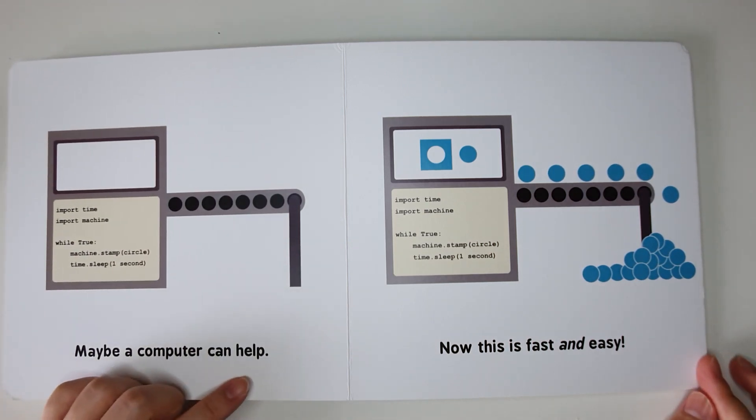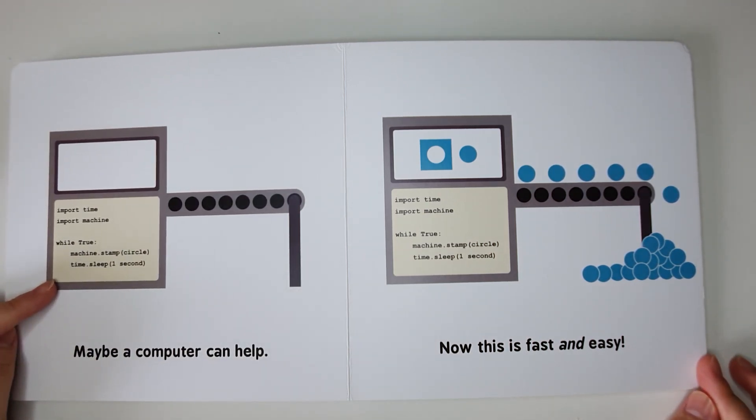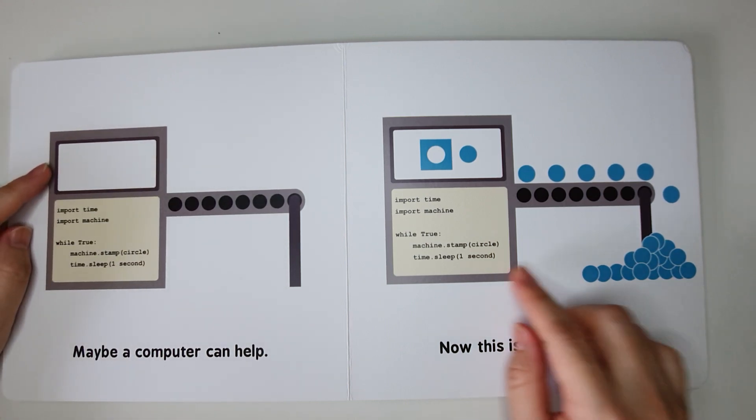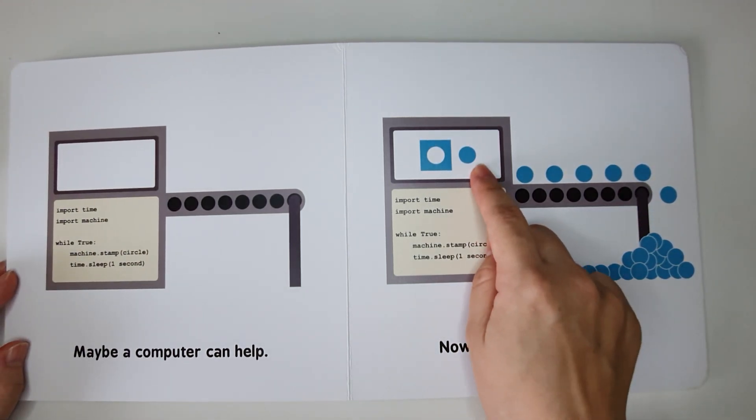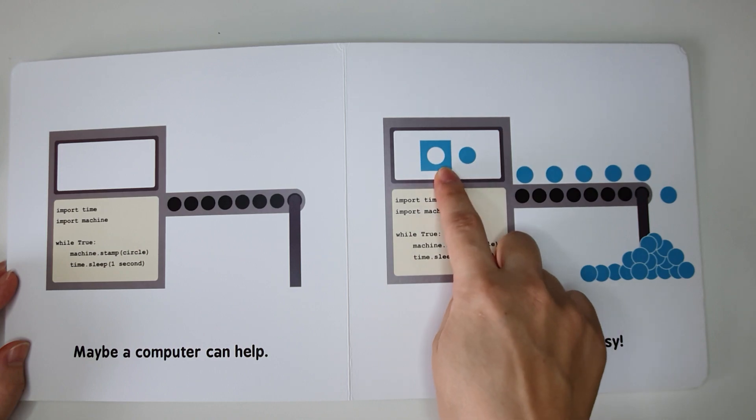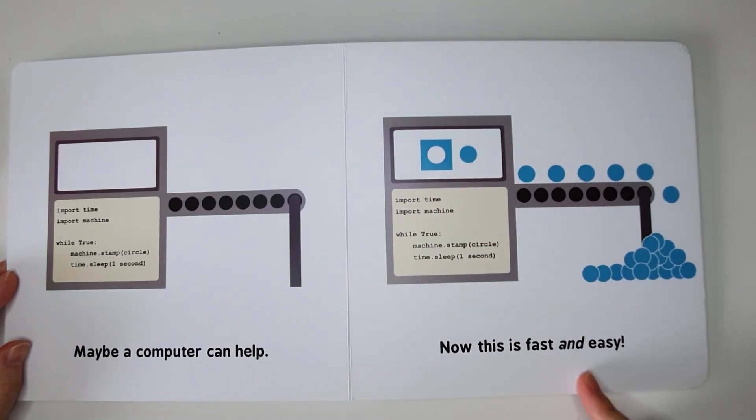Maybe a computer can help. With a computer, we will be able to introduce an algorithm to the machine. An algorithm will be able to tell the machine to cut the circle from the paper. Now, this is fast and easy.